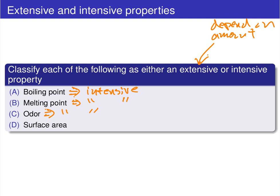Surface area is extensive — it obviously depends on how much of that stuff you have present. If you increase the surface area, you must have increased the amount of substance. Throughout this course, we'll be classifying all the properties we encounter as either intensive or extensive, and it will help guide our understanding of these different properties and the underlying behavior of these different substances.